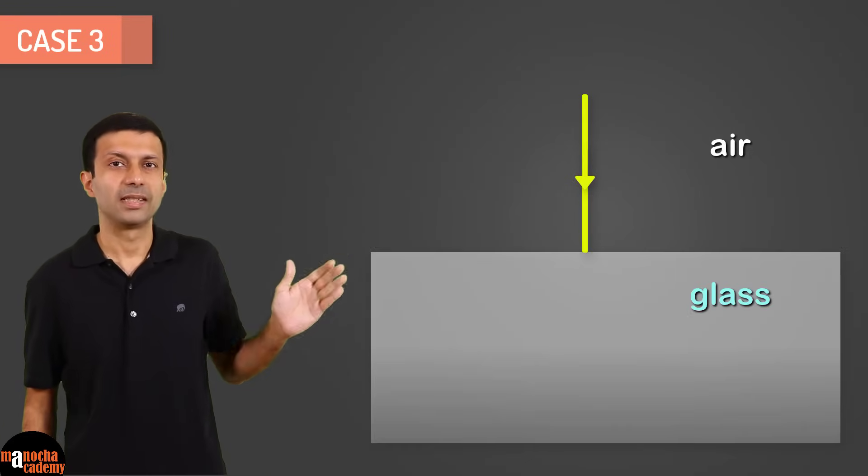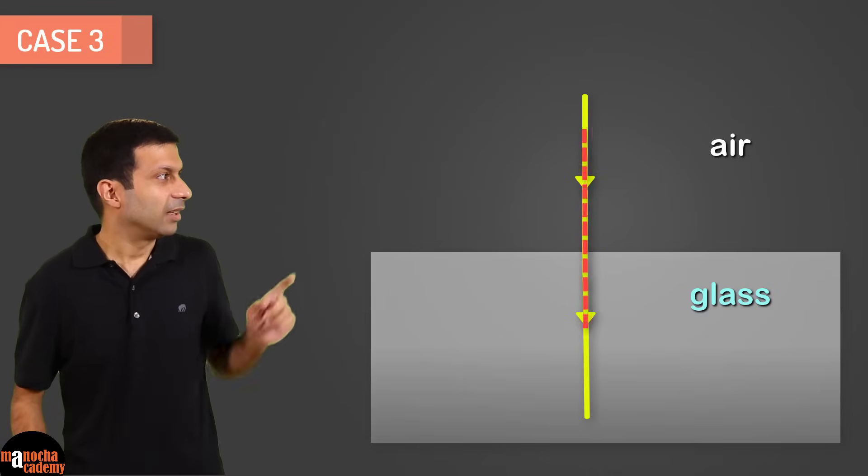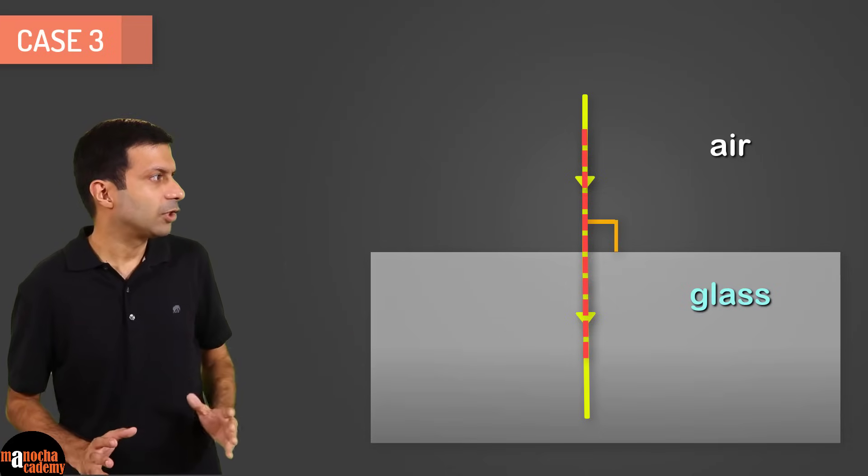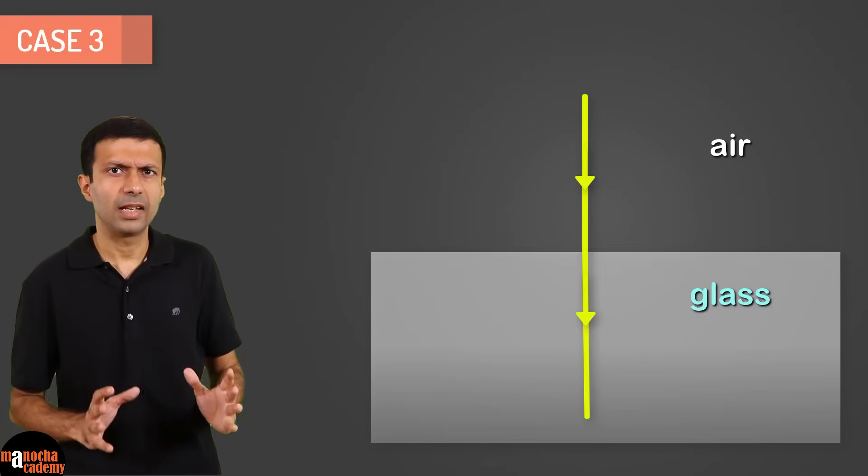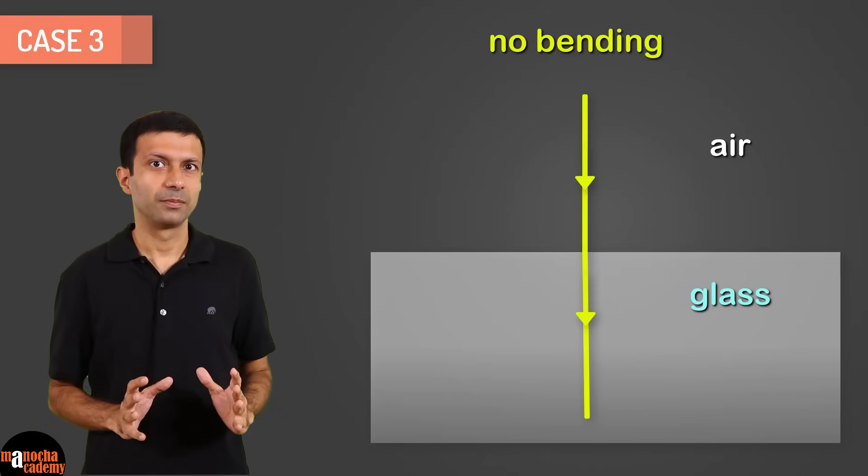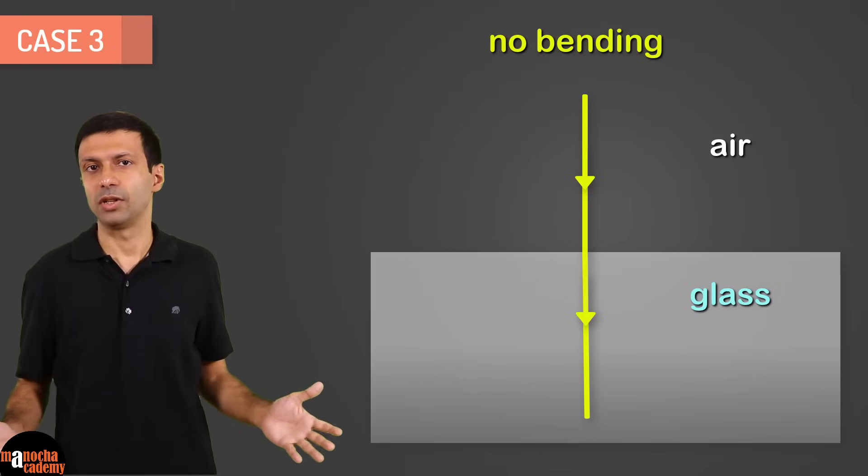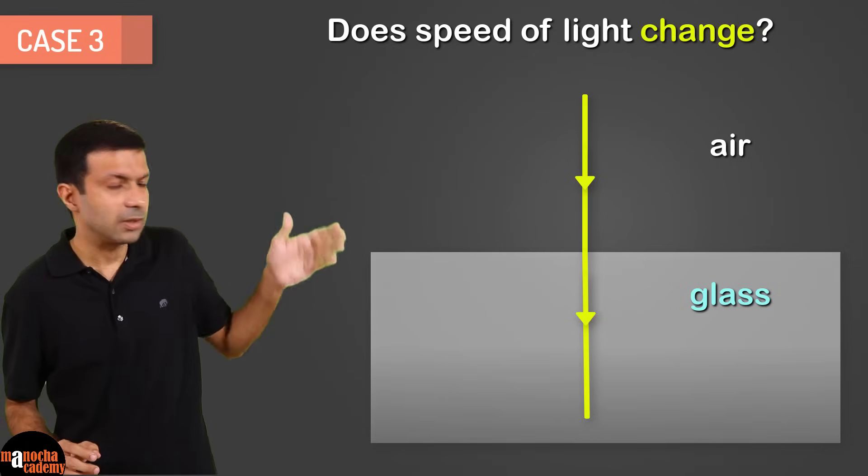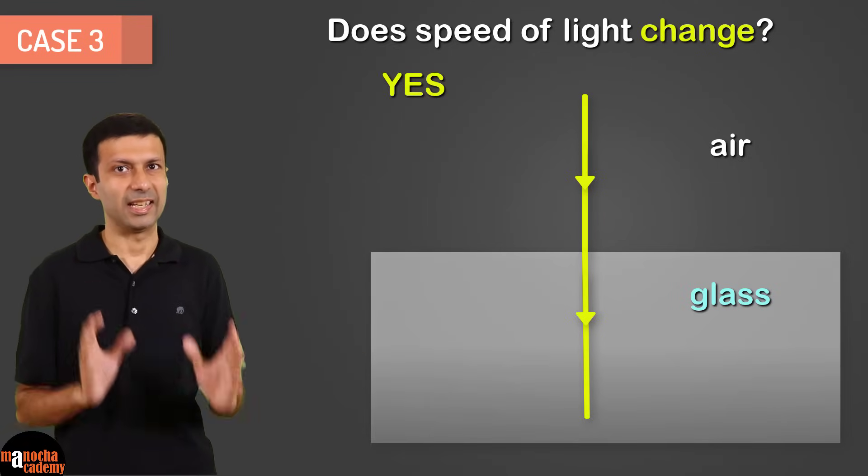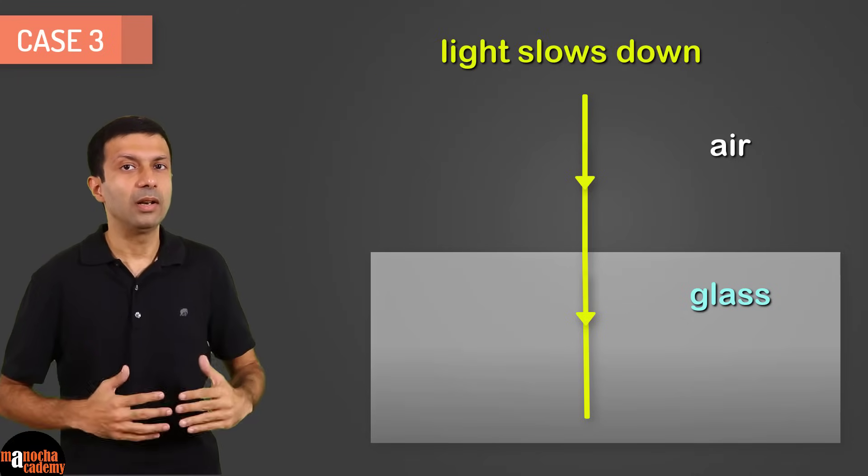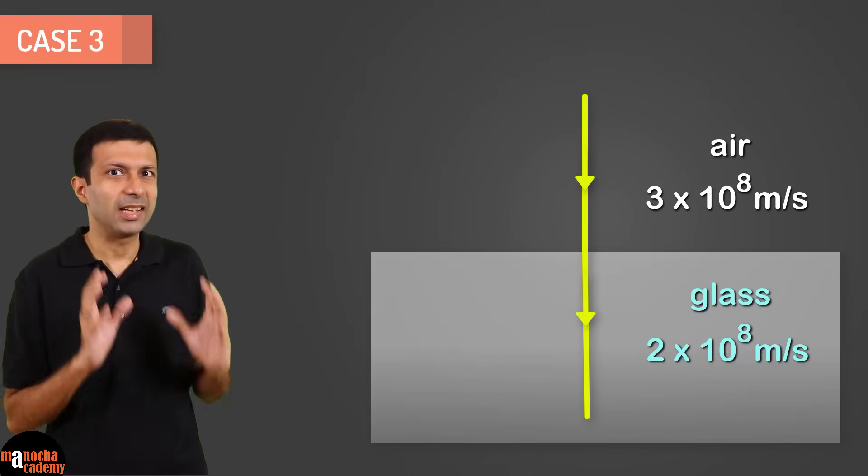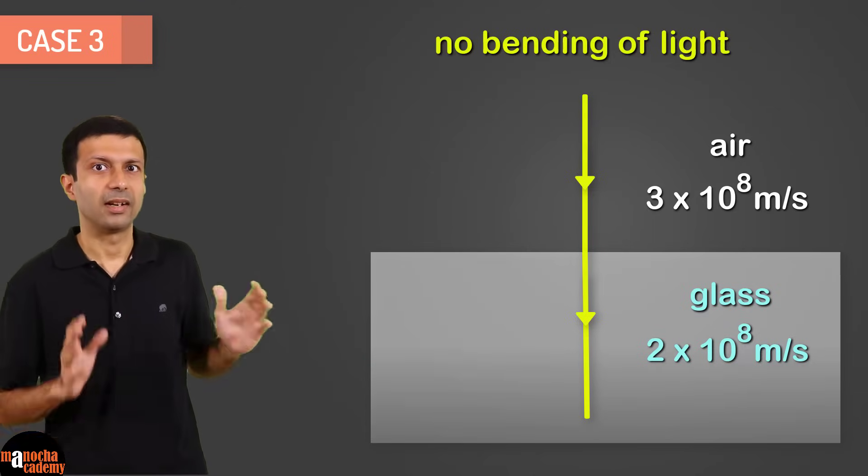There is another interesting case where the light is incident normally on the second medium. As you can see, the incident ray's along the normal here. But even though the light is traveling from air to glass, can you see that there is no bending taking place? So we say there is no refraction happening here. But does the speed of light change when it enters the glass block? The answer is yes. As expected, the light will slow down when it goes from air to glass. But in this interesting case, there is no bending of light happening here.